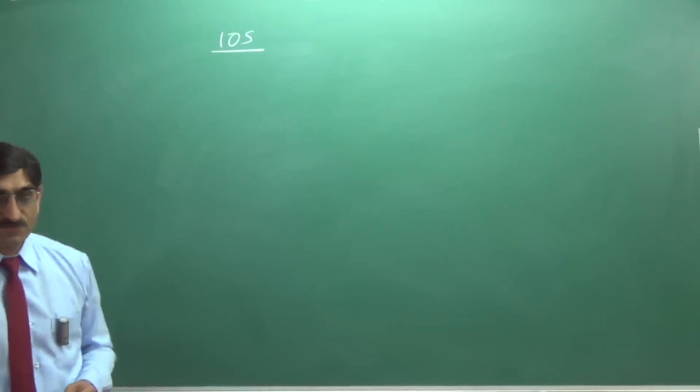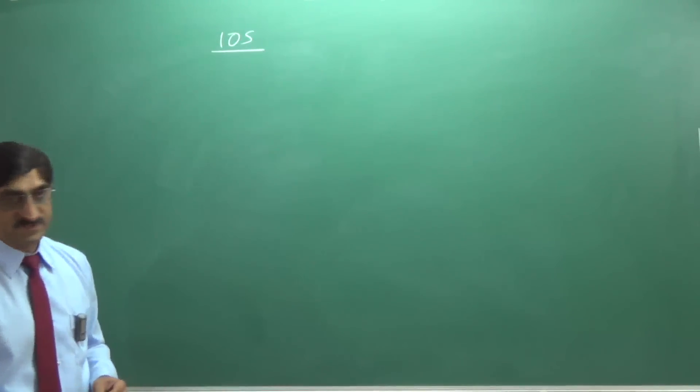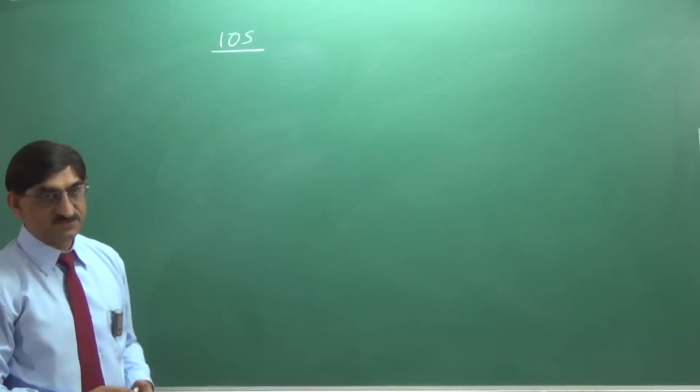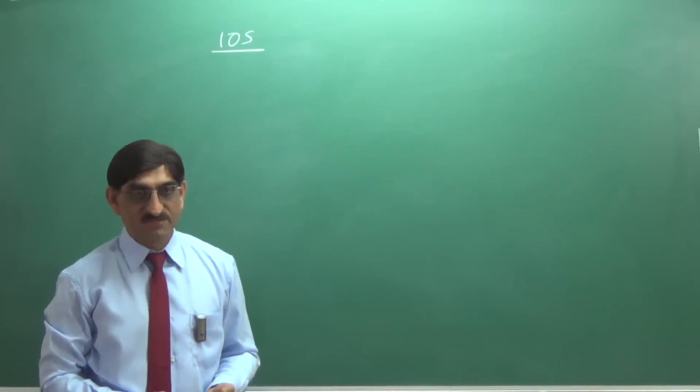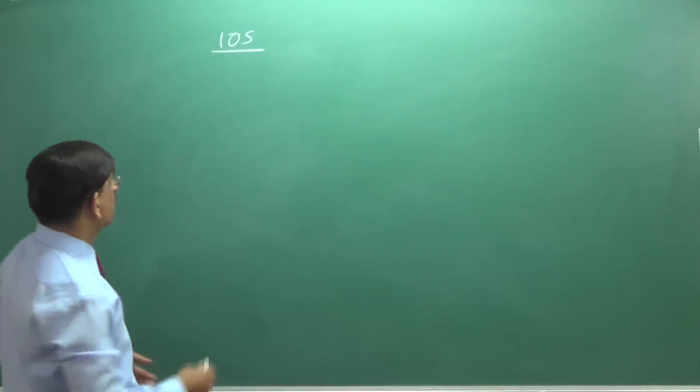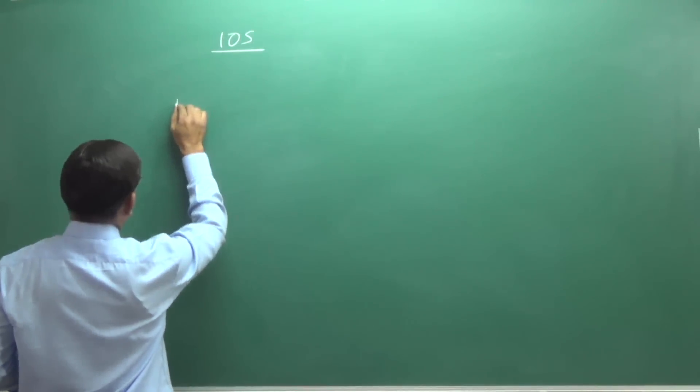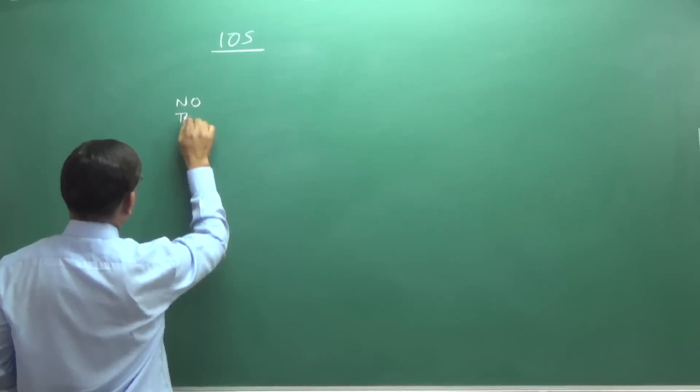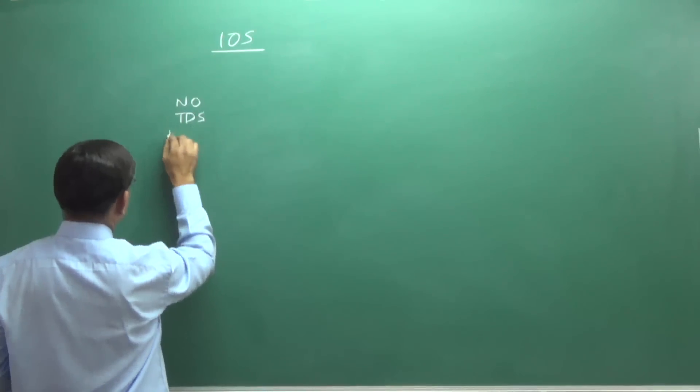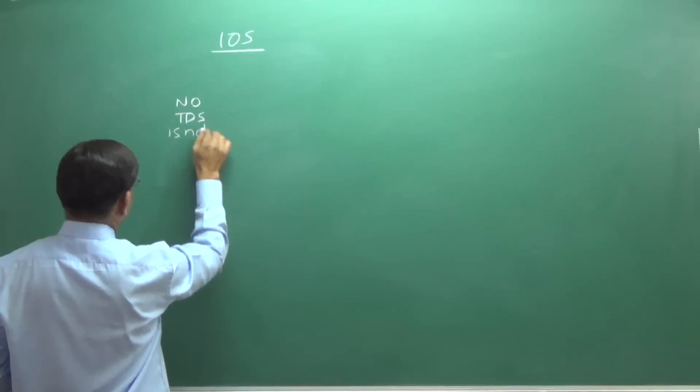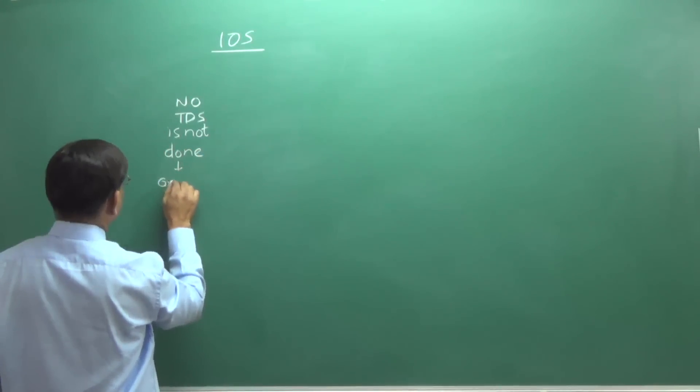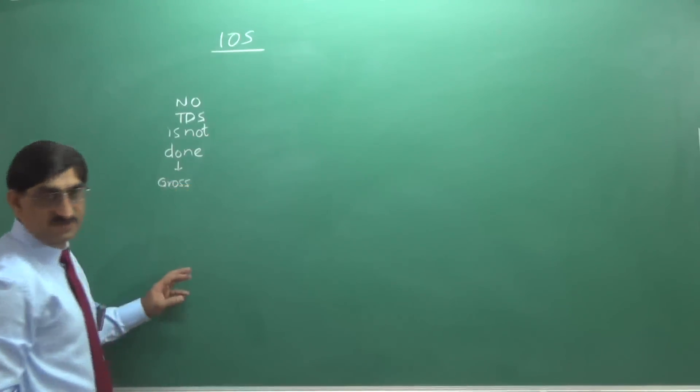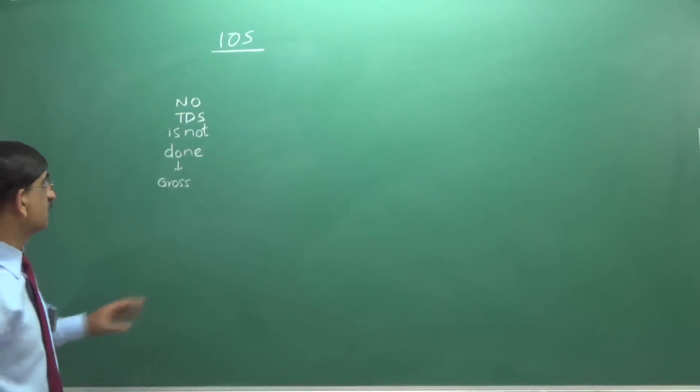There are a few prerequisites to be learned before what we know income from other sources. There are certain sources where the TDS would have been done. If TDS is not done, no TDS is done. TDS means tax deducted at source. It's not done. We call this gross. In other words, there is no need for any adjustment.